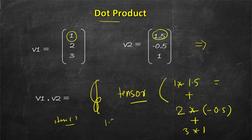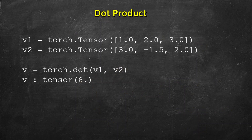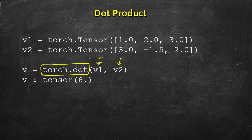So 1.5 minus 1 plus 3 equals 3.5. You will get a result like tensor(3.5). In PyTorch, to perform dot product you use the torch.dot function and pass both vectors v1 and v2 to get the result. If you want a Python number you can call the .item() function on it.